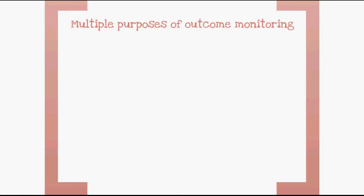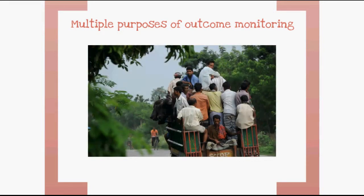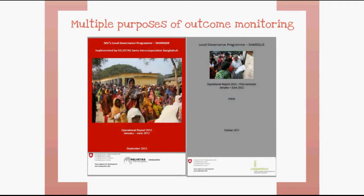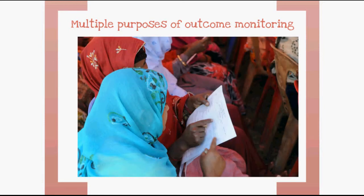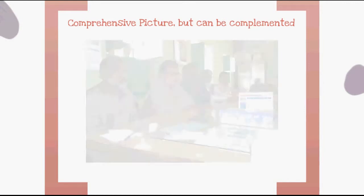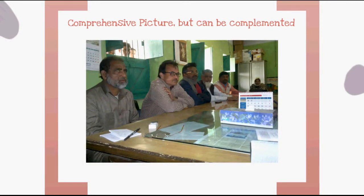The experience of Shariq highlights several positive aspects and challenges of outcome monitoring. One lesson is that outcome monitoring serves multiple purposes. For example, it enables the project to measure progress at the outcome level, serves for reporting to donors, acts as a benchmark among local governments, and helps assess the performance of local governments in view of providing co-funding. At the same time, it is a learning tool for the project team, partner NGOs and local governments. Outcome monitoring provides a comprehensive picture, addressing the overall performance and governance situation in the local government units.